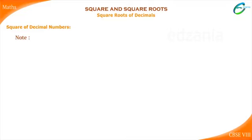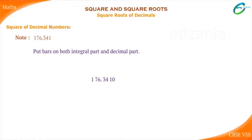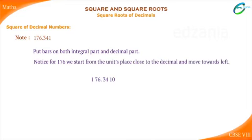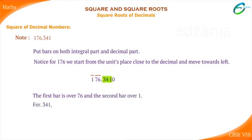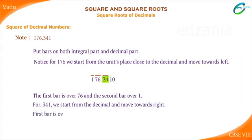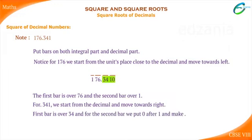Note: Consider a number 176.341. We put bars on both the integral part and decimal part. For 176, we start from the units place close to the decimal and move towards the left — the first bar is over 76 and the second bar over 1. For 341, we start from the decimal and move towards the right — the first bar is over 34, and for the second bar we put 0 after 1, making it 3410.